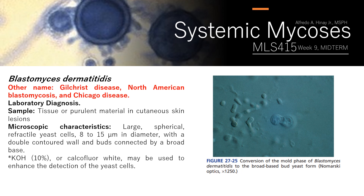For microscopic characteristics, Blastomyces dermatitidis shows large spherical yeast cells, 8 to 15 micrometers, with a double-contoured wall and buds connected by a broad base. You can use KOH 10% to enhance detection of yeast cells. In the mold phase, conidia are born on short lateral branches, ovoid to dumbbell-shaped, varying from 2 to 10 micrometers in diameter.